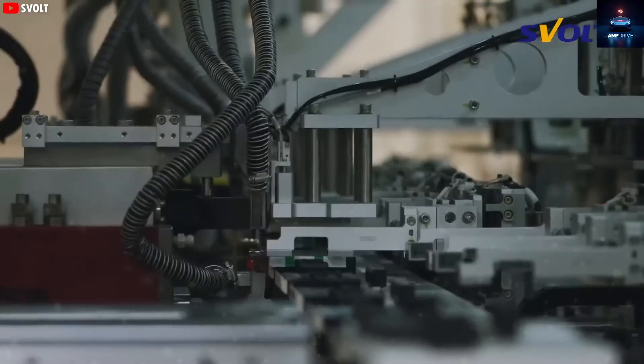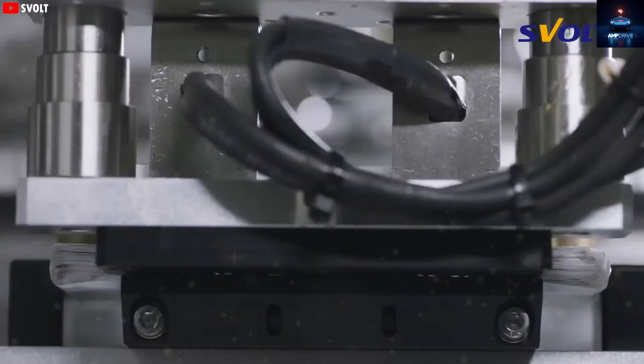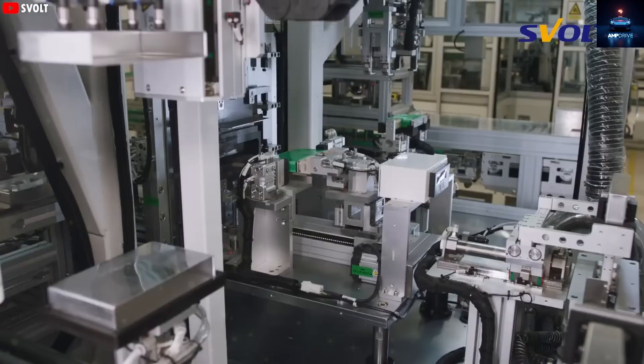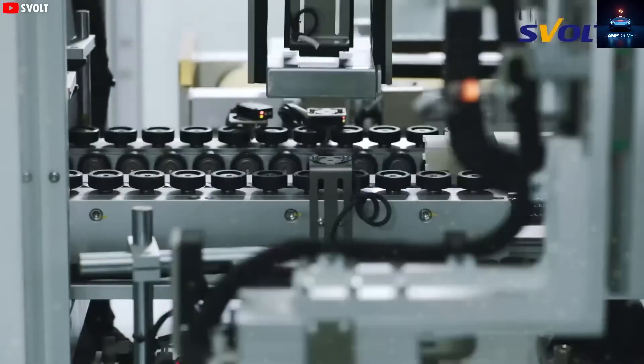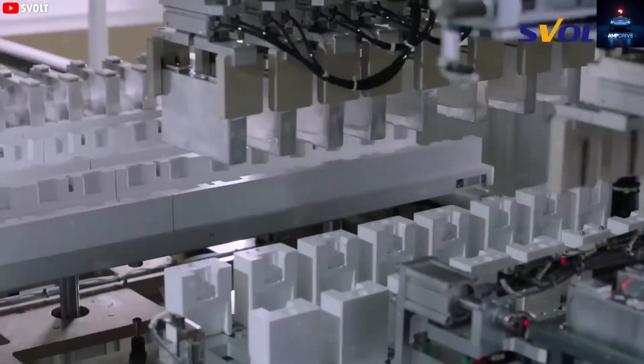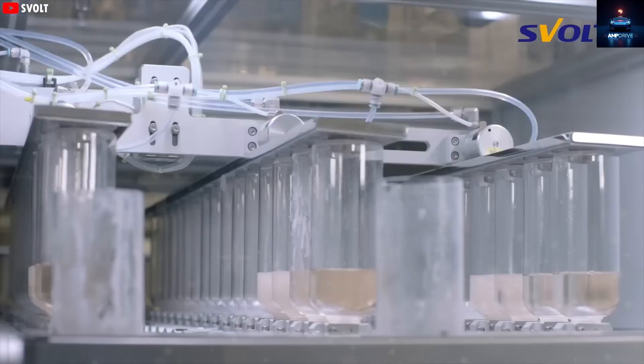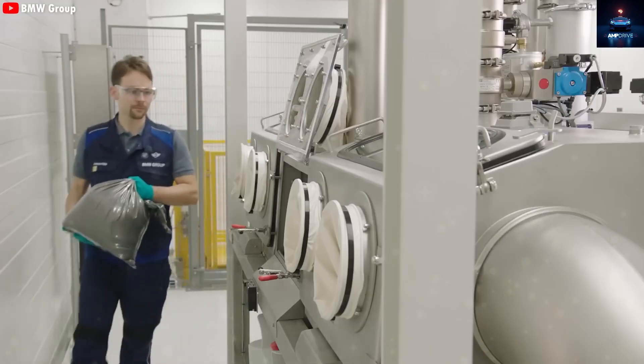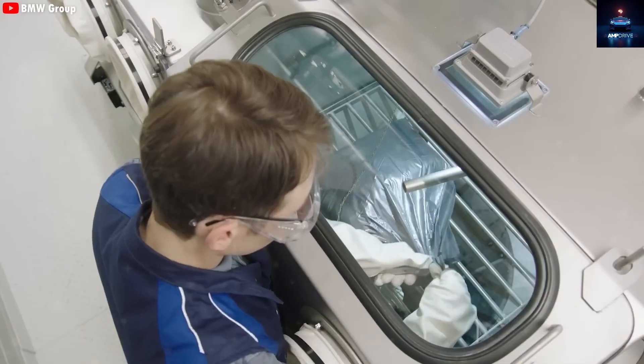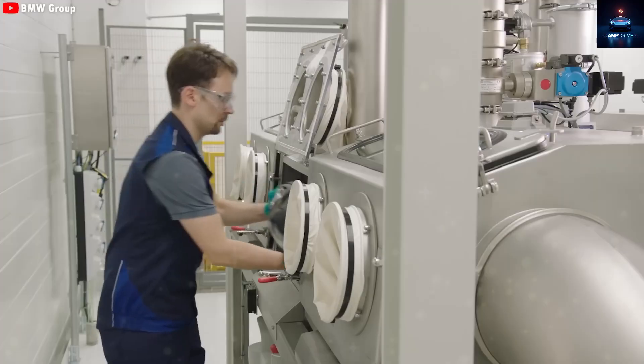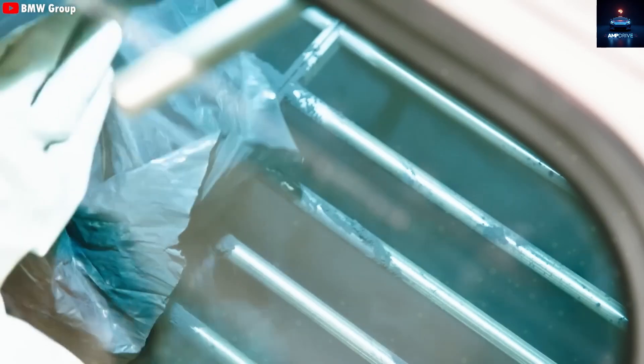Now, is Tesla's 4680 the better pick? The 4680 has a design where both the anode and cathode have full polarity tabs, which shortens the path for electrons. This leads to better internal performance. The internal resistance of the 4680 is one-fifth of that in Tesla's older 2170 batteries. That means faster charging.